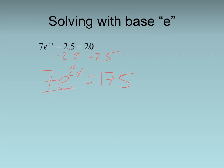How do I get rid of that 7? I divide by 7. So I'm going to get e to the 2x equals 2.5. You can probably use your calculator for that.